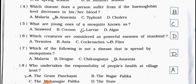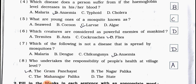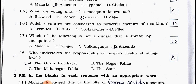Question 5: What are young ones of a mosquito known as? A. Seaweed, B. Cocoon, C. Larva. Answer is option C — Larva.